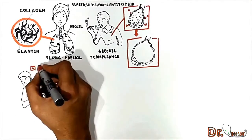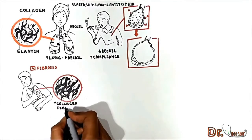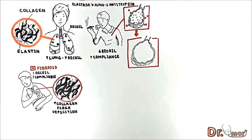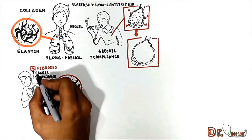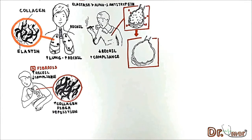Also, in clinical practice, in the case of fibrosis, we have increased collagen fiber deposition in the lung, which increases the tissue component of elastic recoil. Increased recoil means the lung is more stiff and difficult to stretch, thus compliance decreases. This is the main reason why patients with fibrosis have trouble with inspiration and not expiration, because the lung is difficult to stretch but easily deflated.